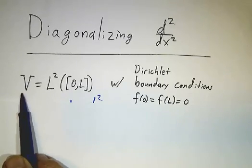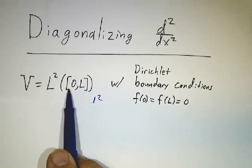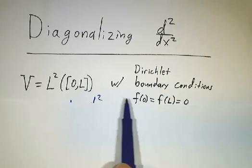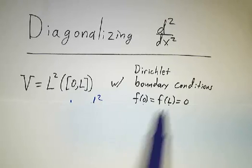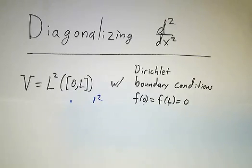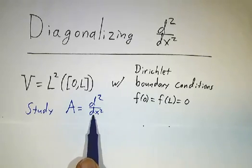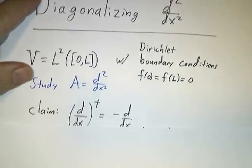Our vector space is square integrable functions on the interval from 0 to L, with f equal to 0 at both endpoints. Our operator is d squared by dx squared, and we want to find its eigenvalues and eigenvectors.